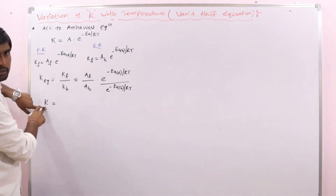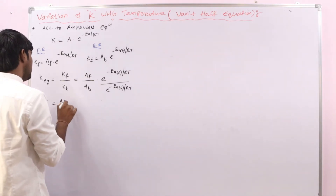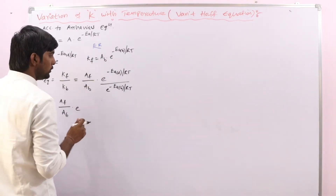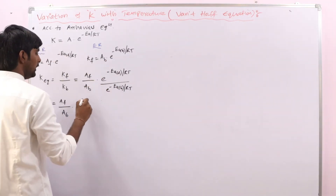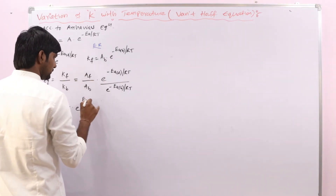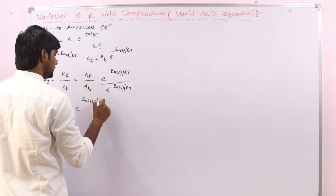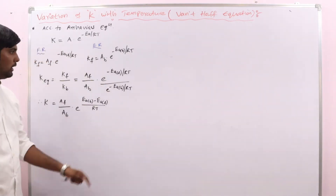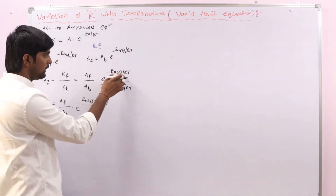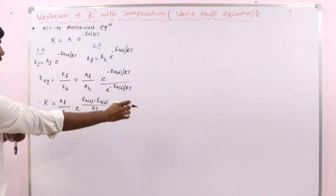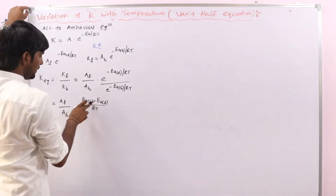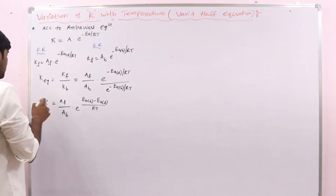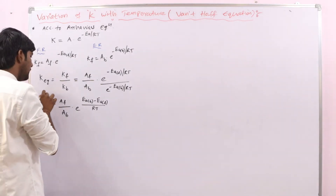So we write: equilibrium constant K equals Af by Ab into exponential of (Ea(backward) minus Ea(forward)) by RT. When the backward exponential comes into the numerator, the sign becomes positive, giving us this expression for the equilibrium constant.